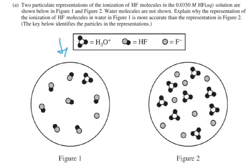Looking at figure one, we can see there are many HF molecules, and only one of them has broken up into H3O plus and F minus. So out of all these molecules, there's only one out of eight molecules that has dissociated. That's about 13%, which accurately represents the weak acid behavior.